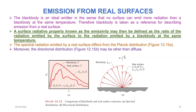We are going to discuss emission from real surfaces. We know that a black body is an ideal emitter — no surface can emit more radiation than a black body at the same temperature. This means the black body emits the maximum amount of radiation, and therefore it is taken as a reference for describing the emission from a real surface.